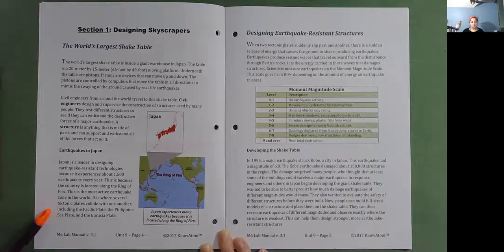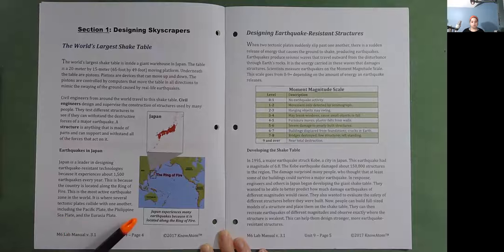It is where several tectonic plates collide with one another, including the Pacific Plate, the Philippine Sea Plate, and the Eurasia Plate. Japan experiences many earthquakes because it is located along the Ring of Fire.